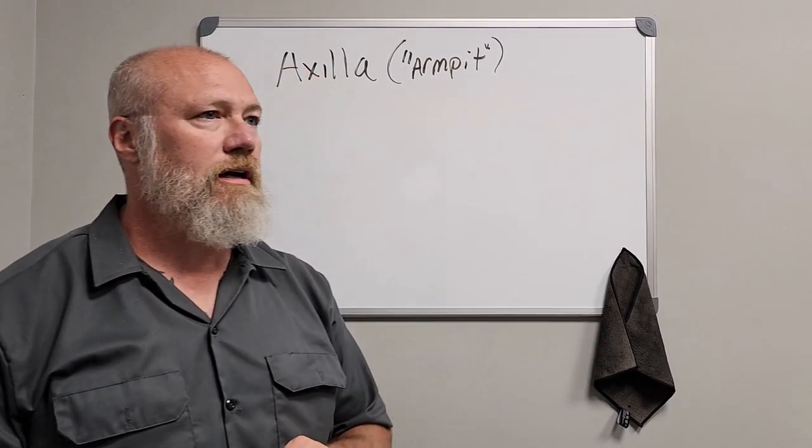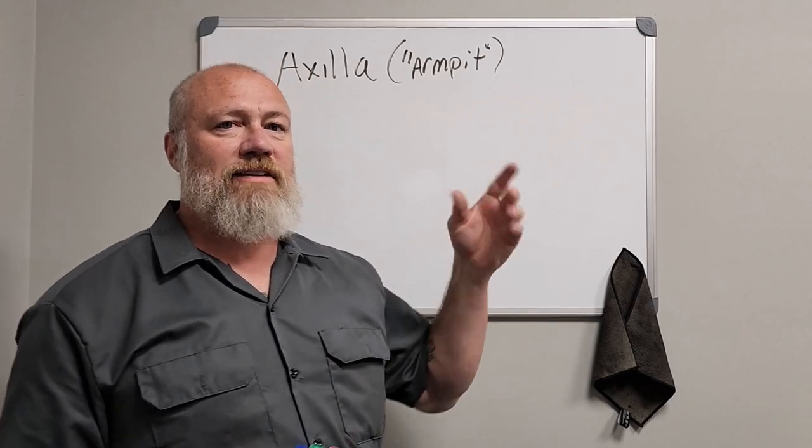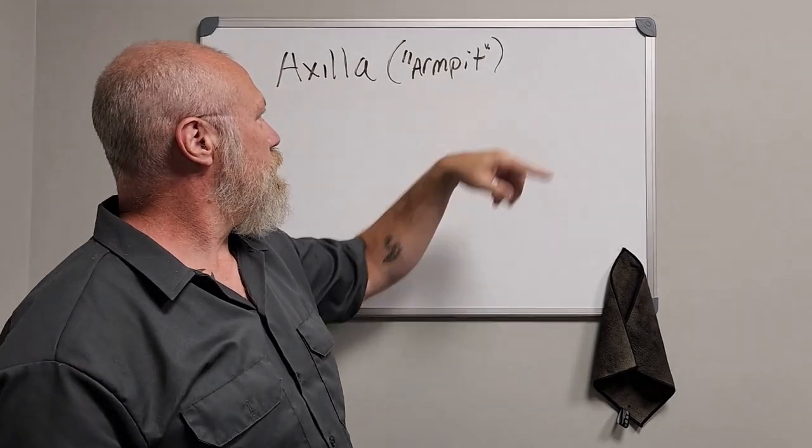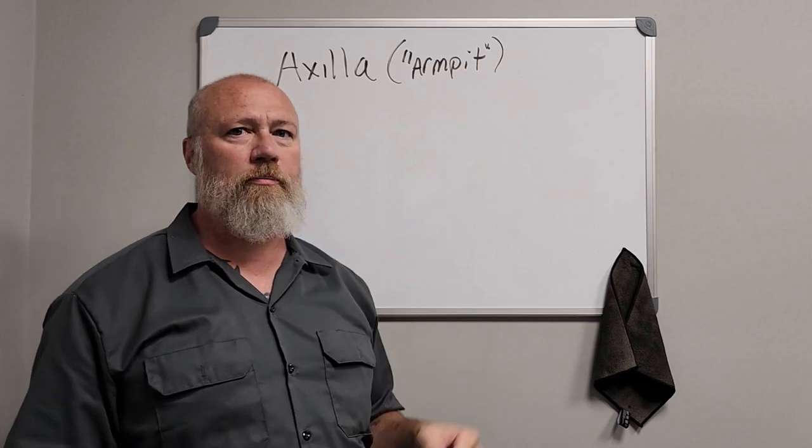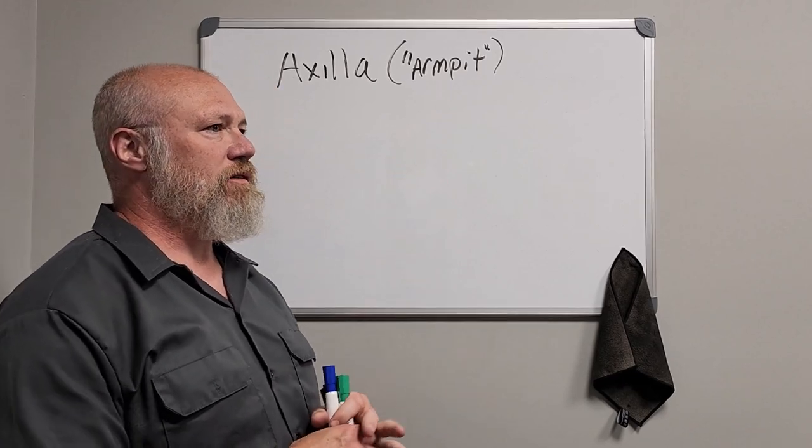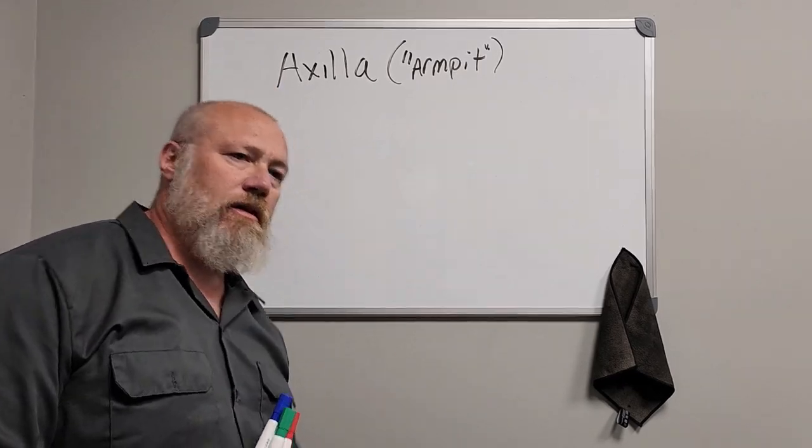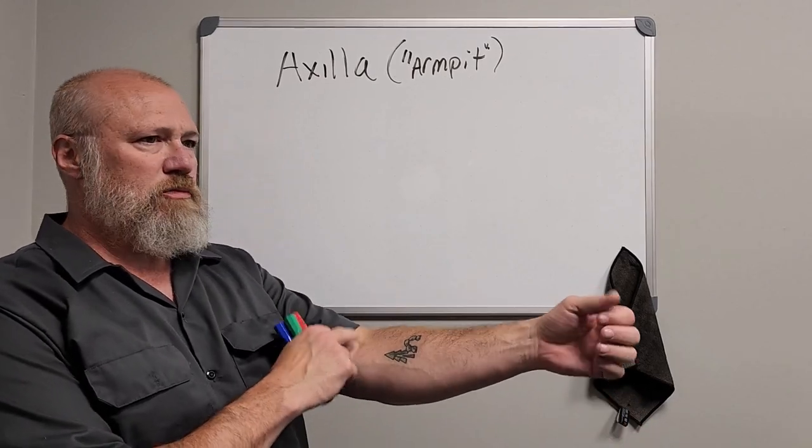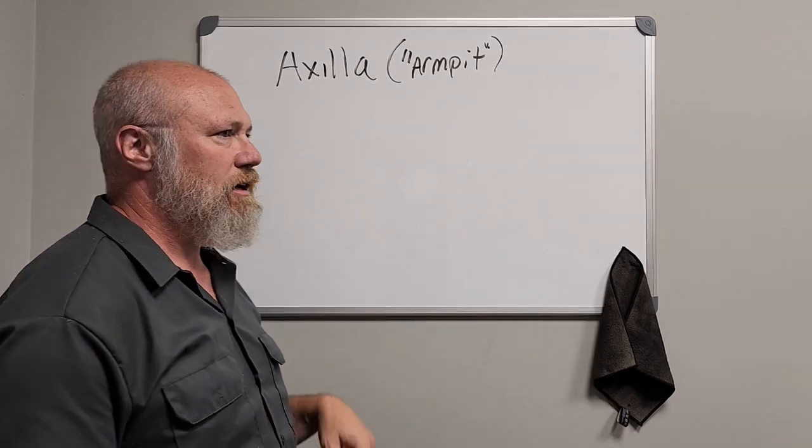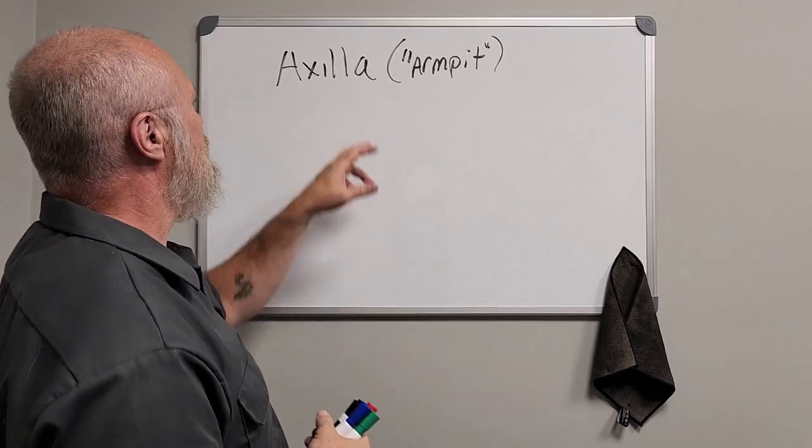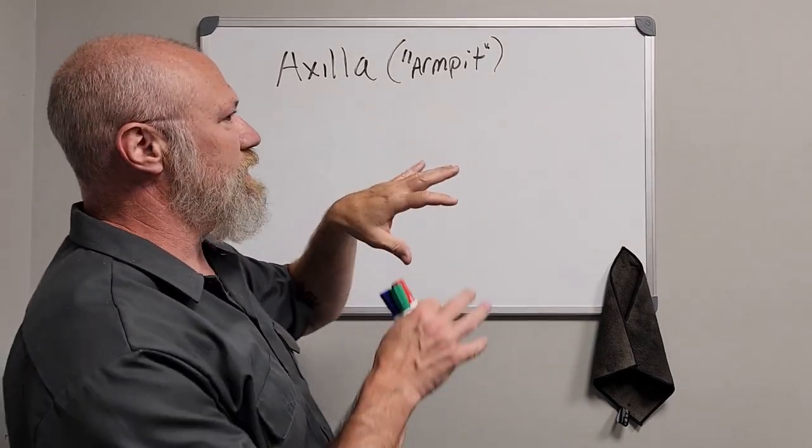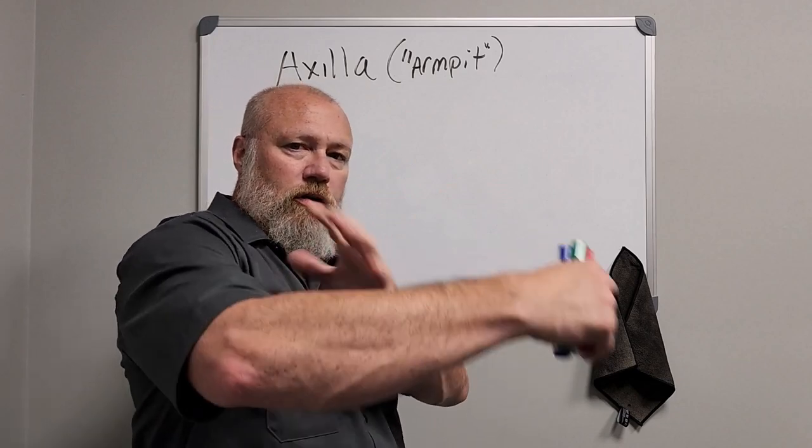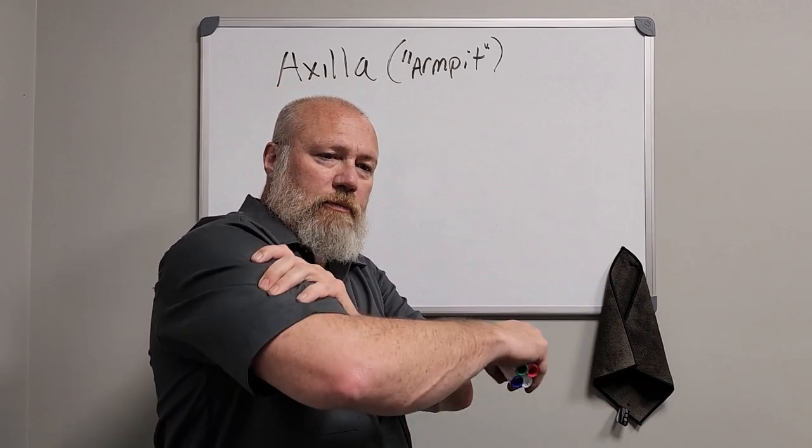Next video in the upper limb is the axilla, or what you would probably, being a normal person, call your armpit. One of several pits we have: knee pits and our popliteal space, we have the antecubital space or the elbow pit. This is your armpit, a region between your arm, the upper arm portion of your upper extremity, and your torso.